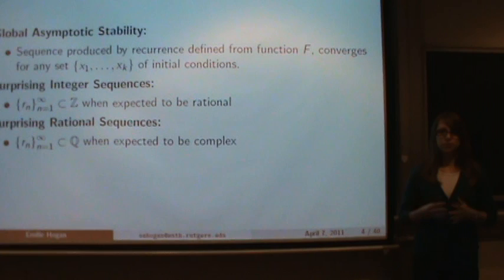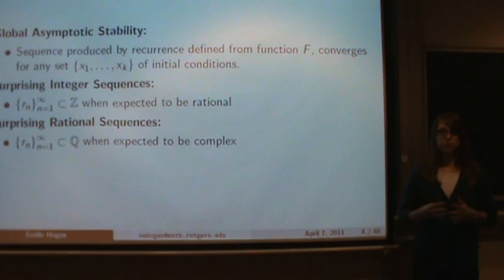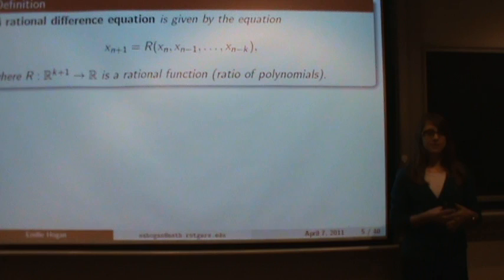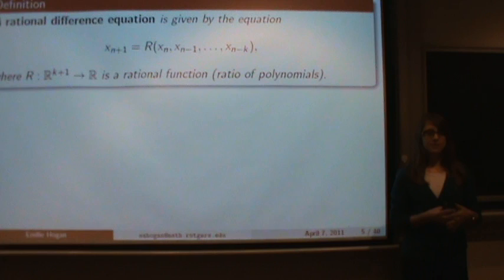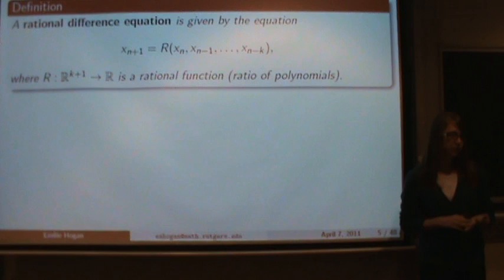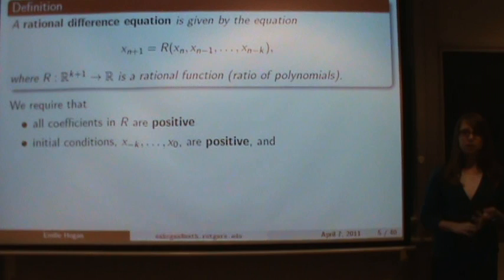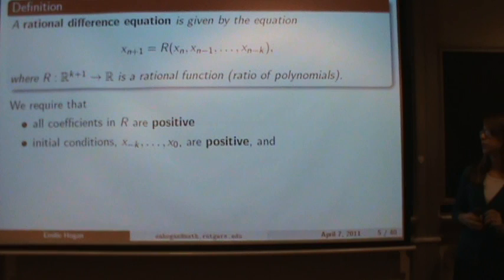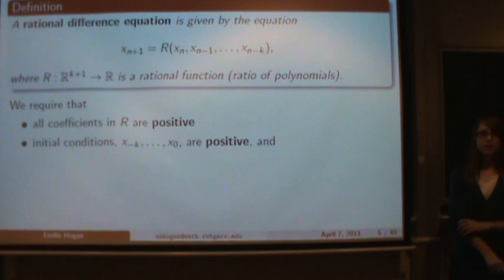I'm going to tell you about a proof algorithm I've created to prove global asymptotic stability. A rational difference equation is defined the same way as a recurrence — it's just a convention in this field to call them difference equations. Our function is now a rational function, i.e., a ratio of polynomials. The coefficients must all be positive, and the initial conditions must also be positive, so that we don't divide by zero. We also start our index at negative k rather than at zero or one, which is another convention in this field.